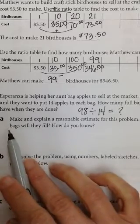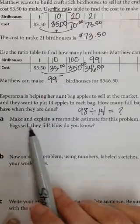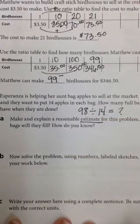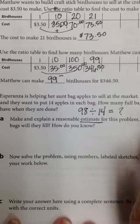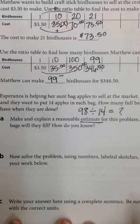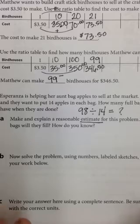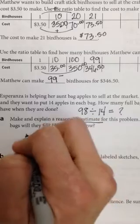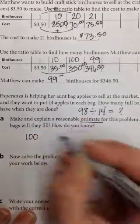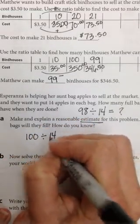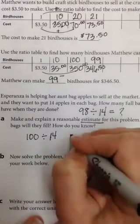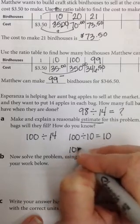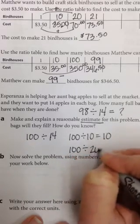So in problem A, it doesn't say to solve yet. It says make and explain a reasonable estimate. So I don't have to solve. I need to make an estimate about how many bags will they fill, and how do I know? Well, if I make an estimate, I like to round on this one because 98 is pretty close to 100. So if I make it 100 divided by 14, I don't really know that in my head. But I know that 100 divided by 10 equals 10.